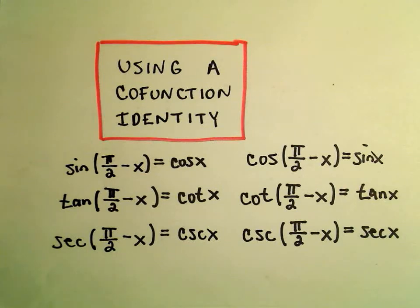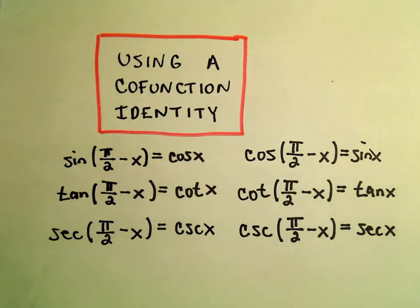Alright, in this video we're going to start looking at some of the co-function identities and I've got all the co-function identities listed down. All of them you could replace the pi over 2 with 90 degrees and get an equivalent co-function identity.